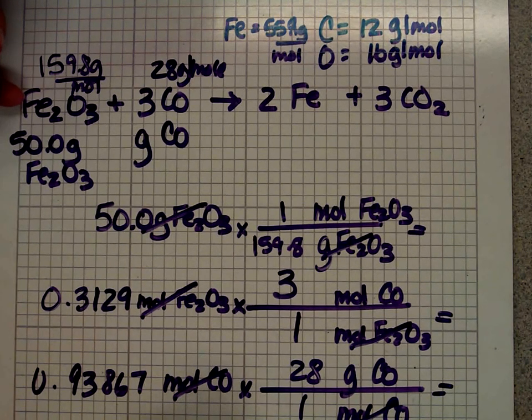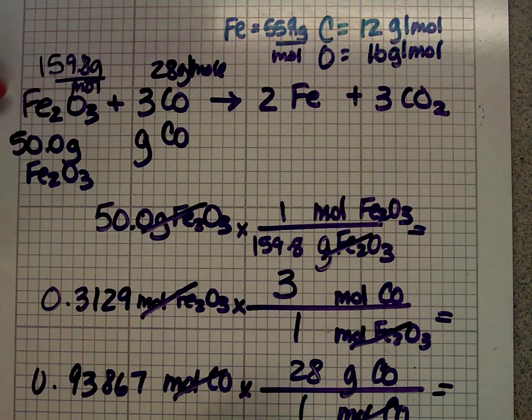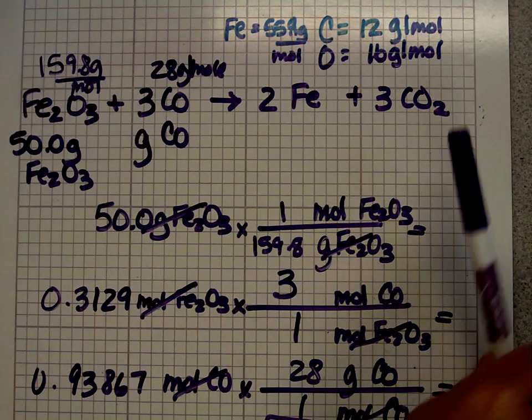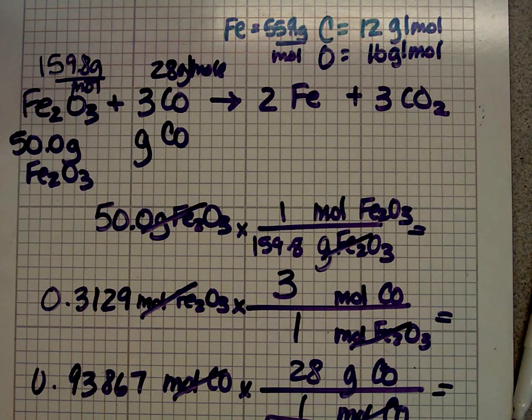And that gives me 26.28. I have, let's see, 3 sig figs. So it's going to be 26.3 grams of carbon monoxide. And that's, folks, how you do stoichiometry problems that are mass-mass.